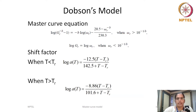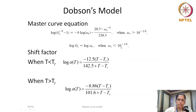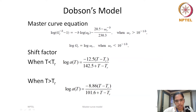The master curve equation proposed by Dobson has two forms: one for reduced frequency greater than some function of the relaxation spectrum, and the other for reduced frequency less than the same form of the relaxation spectrum. This function depends on the width of the relaxation spectrum and the reduced frequency, which in turn depends on the shift factor.